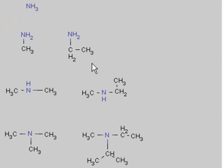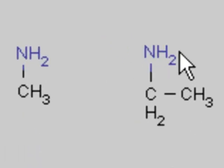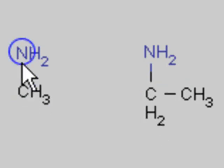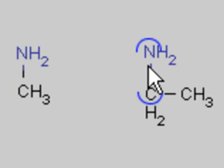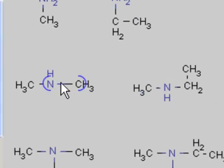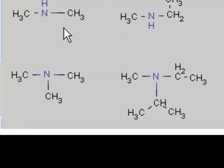Here are four groups of structures. The first one is ammonia, which is considered the simplest amine. The structures with two hydrogens on the nitrogen are called primary amines — primary because they only have one carbon singly bonded to the nitrogen. Secondary amines have two carbons singly bonded to the nitrogen, and a tertiary amine has three singly bonded carbons to the nitrogen.